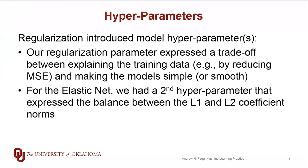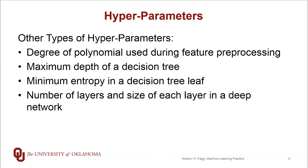Elastic net also has a parameter for this bias-variance trade-off, but within the bias side it also has a second hyperparameter that allowed us to talk about the form of the bias — in particular, it allowed us to walk between the L1 and the L2 norm in selecting our coefficients. We have lots of different kinds of models, and each one generally has a whole set of different hyperparameters that are possible.